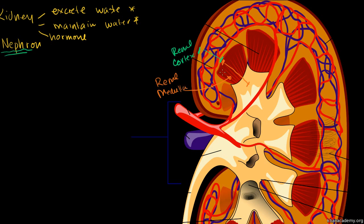And then this area right here is the renal medulla. Medulla comes from 'middle,' so you can almost view it as the middle of the kidney. Besides just understanding these words, we're going to see that they actually play a very important role in the filtration, the excretion of waste, and the ability to not excrete too much water when we're trying to filter our blood.